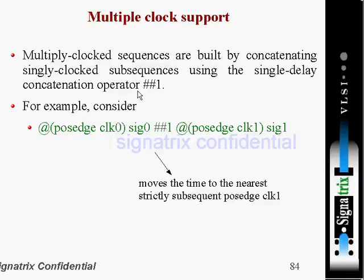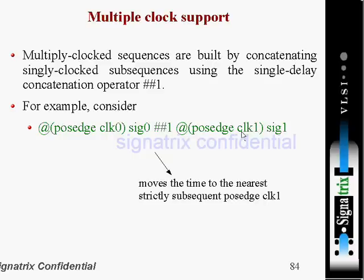Multiply-clocked sequences are built by concatenating singly-clocked sequences using the single delay concatenation operator. In this example, we are using 'clock_0' and 'clock_1' to make multiple-clock support using the concatenation delay operator. This operator moves time to the nearest strictly subsequent passage of 'clock_1' — whichever passage of clock is nearest is the one it will take.